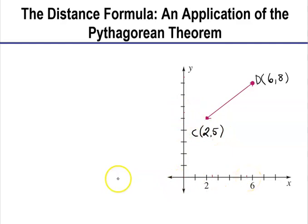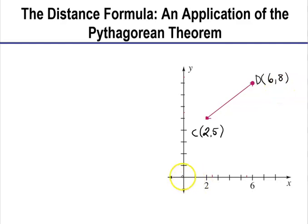So this is y, x is 2, y is 5. And then the other point, D, is the point (6, 8). So the x value is 6, the y value is 8. Notice the x value is over at 6, and then you go up to y equals 8, and this is 8 right here. I want to know how long this line is.